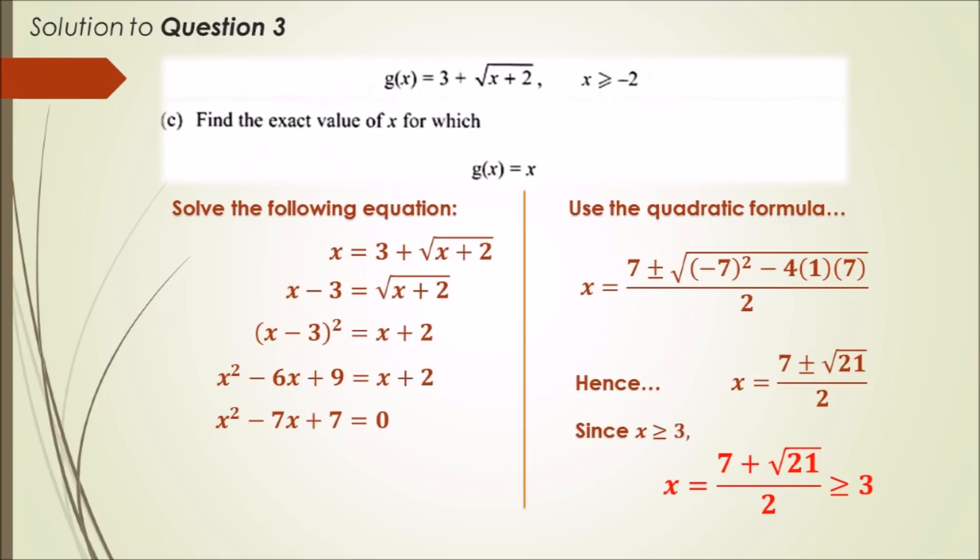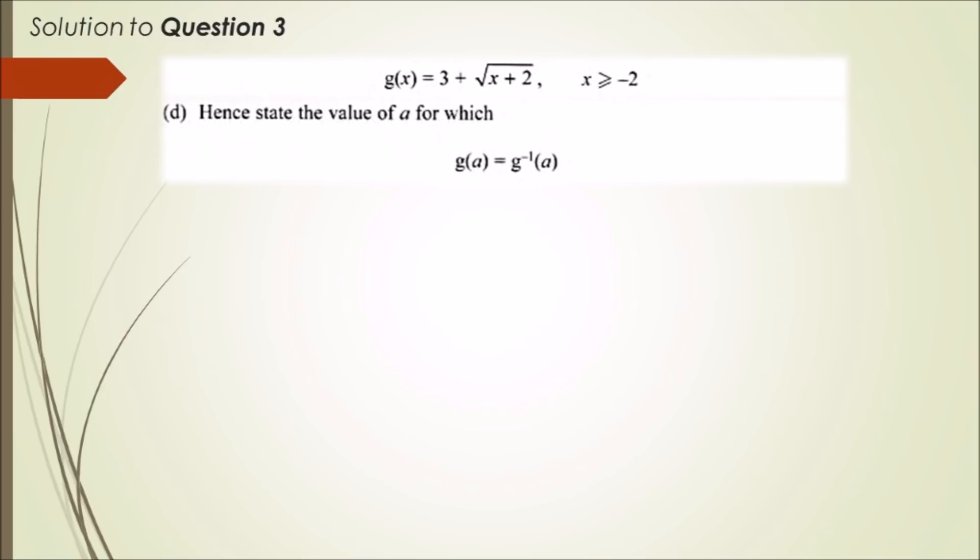Part (d): hence state the value of a for which the following function g(a) is equal to its inverse. If we look back, we can clearly see that from part (c) it said that g(x) equals x. So clearly, if g(x) equals x...